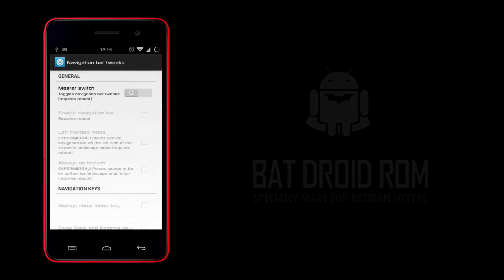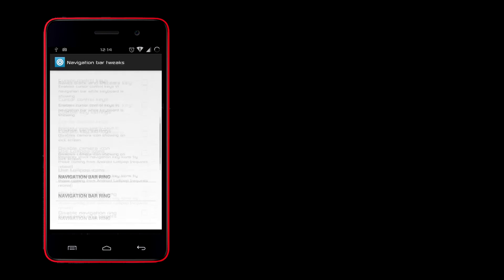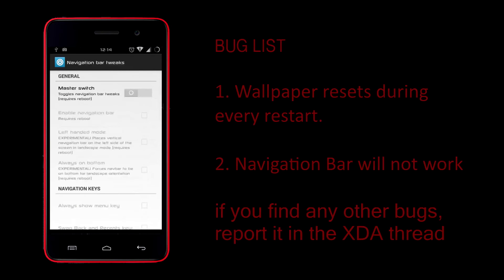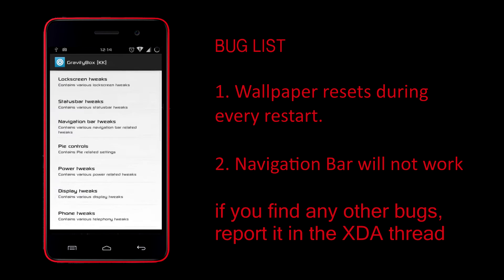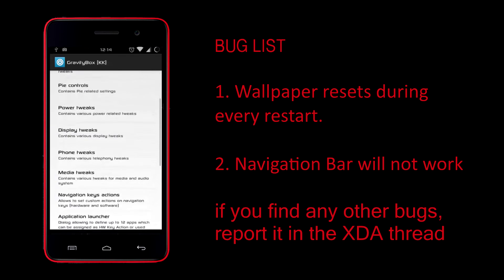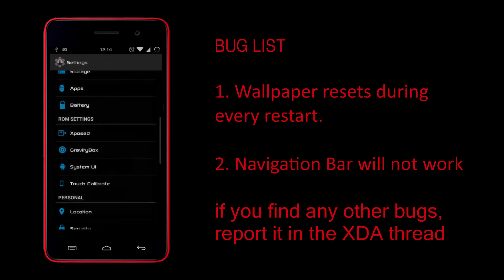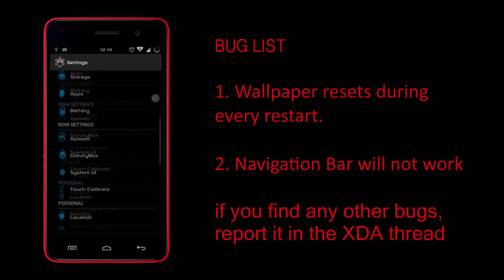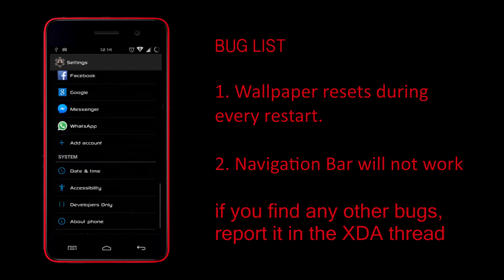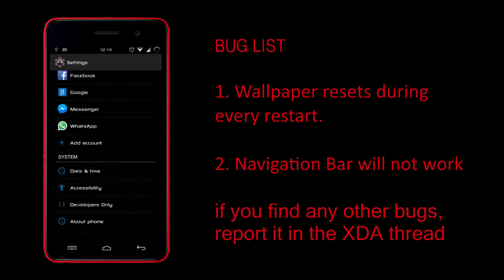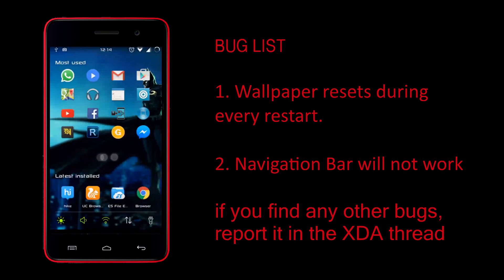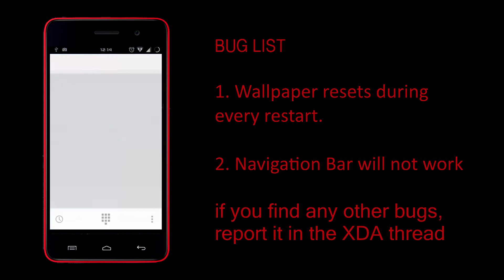In the Gravity Box everything is implemented except the navigation bar — you cannot enable the navigation bar in this ROM. I forgot to mention that in my ROM thread; it's a major problem. If you enable the navigation bar, the System UI will force-close. But everything else is there and you can customize your device.